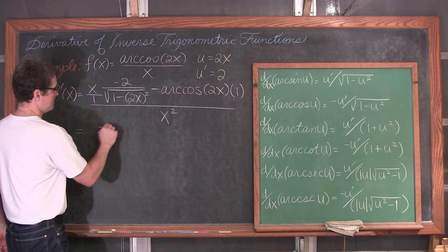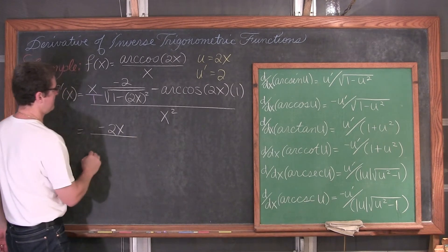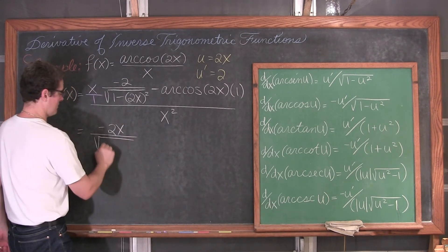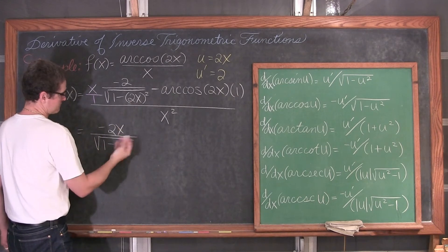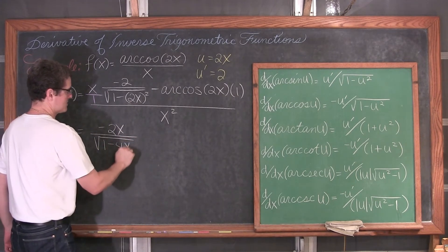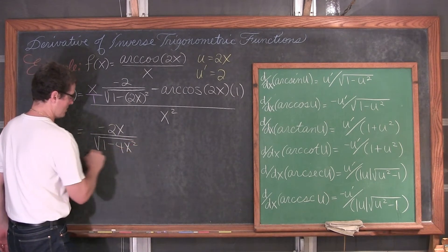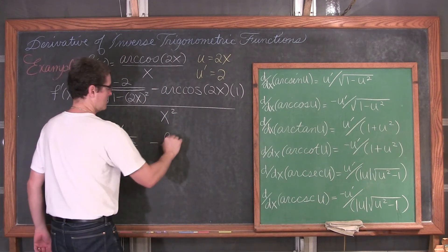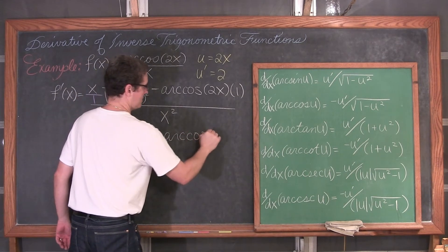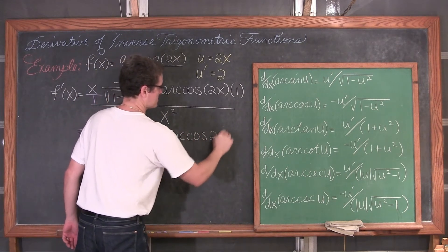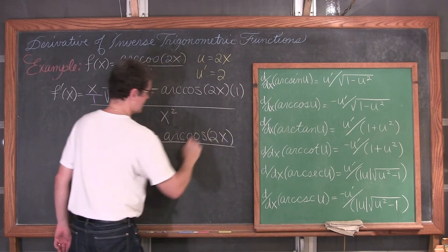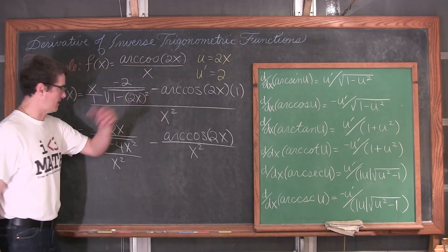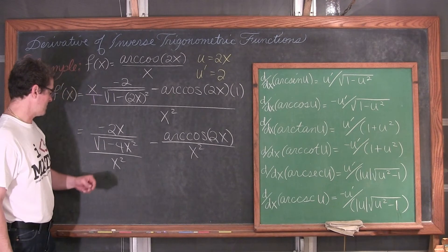So we get negative 2x over the square root of 1 minus 4x squared, all over x squared, minus arc cosine of 2x over x squared. I am just going to leave that expression like that — not much more we can do there.